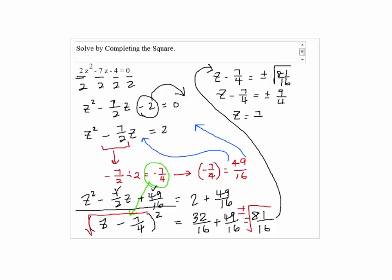So we have z equals 7 over 4 plus or minus 9 over 4. So we have two answers. One is 7 over 4 plus 9 over 4, which is 16 over 4, which is 4. The other one will be 7 over 4 minus 9 over 4, which is negative 2 over 4.